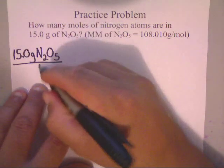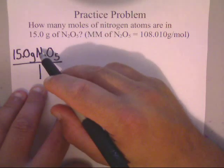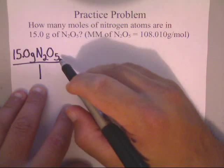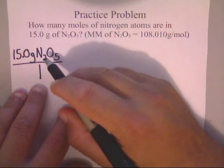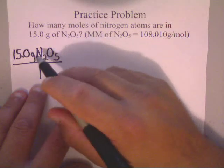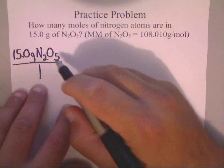Now please make sure that you know that there are two nitrogen atoms and that there are five oxygen atoms in this compound. Now I know the smallest part of a compound is a molecule, but I'm looking at the individual elements.